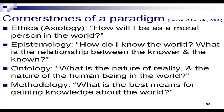So axiology addresses where one draws the line. Then epistemology: how do I know the world? What is the relationship between the knower and the known? Then ontology: what is the nature of reality and the nature of the human being in the world? And methodology: the study of methods — what methods are available and what is the most appropriate method to approach a particular problem?